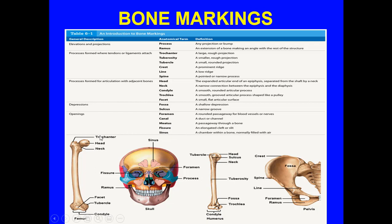You've got some very good examples from the femur, which includes the condyle, tubercle, facet, head, neck, and trochanter. Then you have the skull where you have the ramus, the fissure, the foramen, the process, and the sinus. Here you have the humerus, which would include the trochlear, the fossa, the tuberosity, the neck, sulcus, head, and tubercle. And then the pelvis where you can see the crest, the fossa, spine, line, foramen, and ramus.